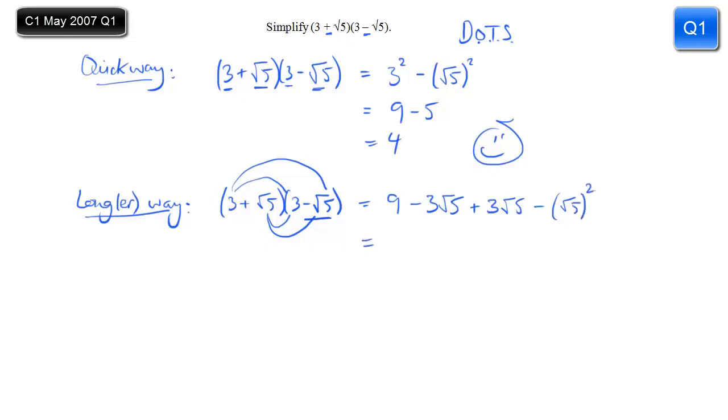And when we write this out, we've got the 9. Those bits there, they're equal and opposite, so they're going to cancel out. So the 9 from the start, we get nothing from those two. Minus, and root 5 squared is 5. So 9 minus 5 again, thankfully, is 4.